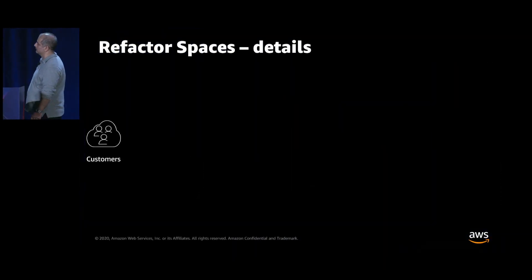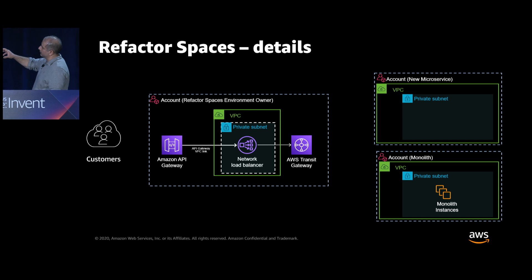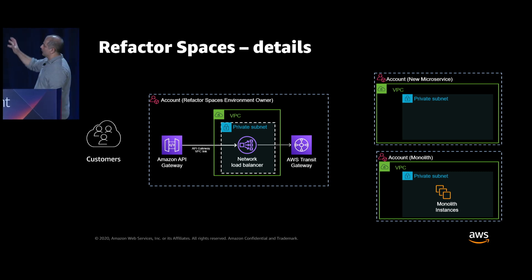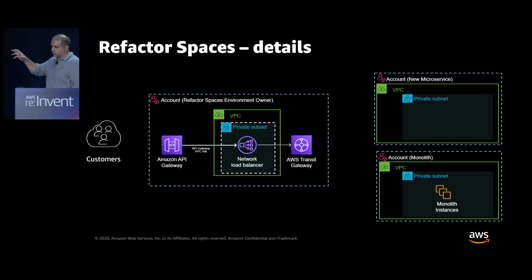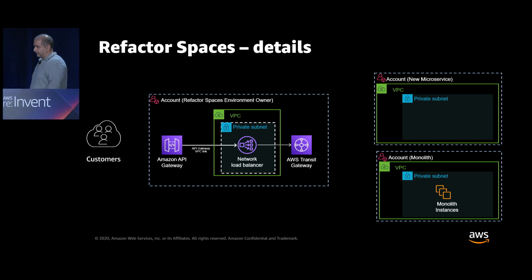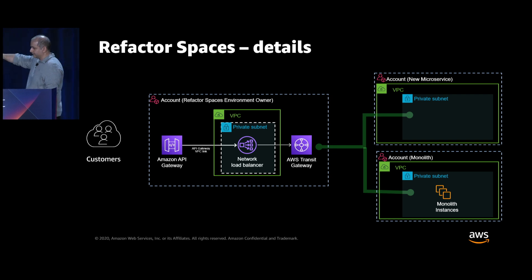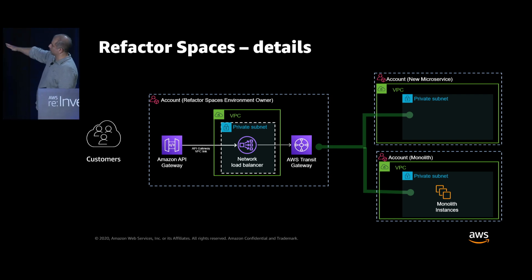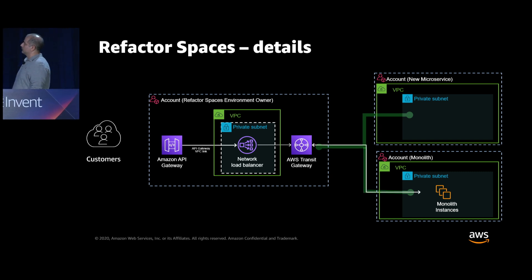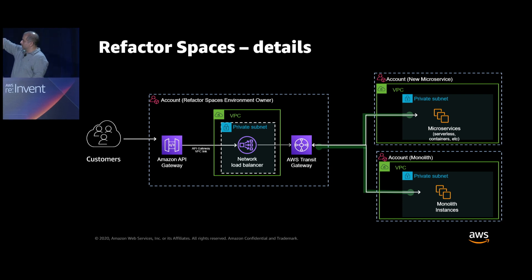What does Refactor Spaces do under the hood? Assuming you have the accounts set up, it will set up an API gateway, a network load balancer, and a transit gateway. All that infrastructure is preset through the service. The VPC in the middle account — which we call the proxy VPC — is either created when you create an environment or pre-created. It's where your application gets routed to different endpoints. I have my monolithic instances as the default experience — say example.com slash goes to the monolith — and I start rerouting customers for slash commerce to my microservices net-new experience in the microservices account.